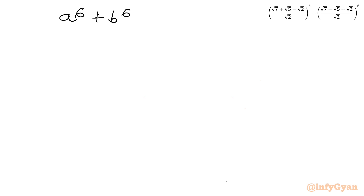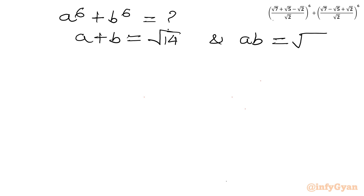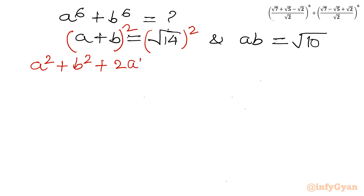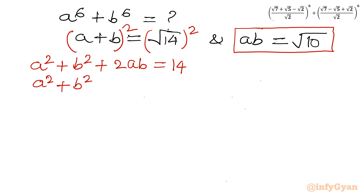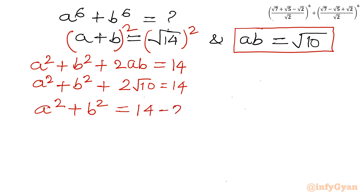For a⁶ + b⁶, I will start with a + b = √14. Squaring both sides: a² + b² + 2ab = 14. Since ab = √10, we have a² + b² = 14 - 2√10.